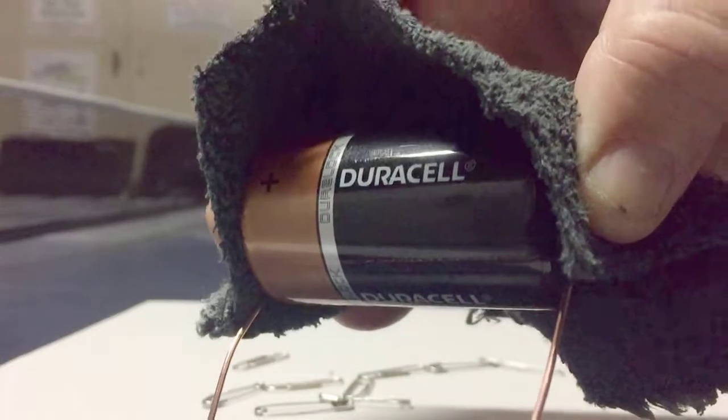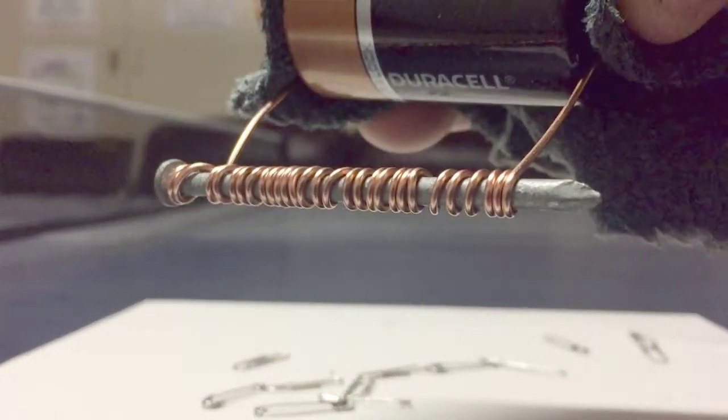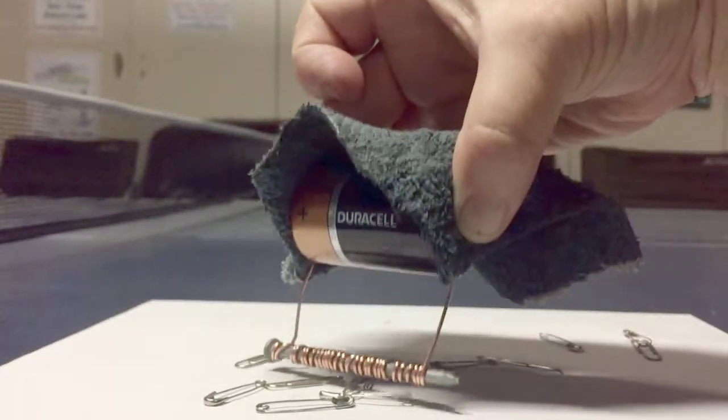By holding the copper on each end of the battery and securing that with a cloth, now you're able to pick up some metal objects. The iron nail has just become a magnet. That's pretty incredible.